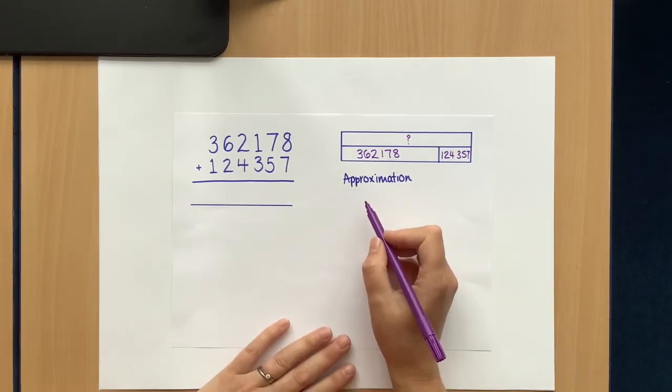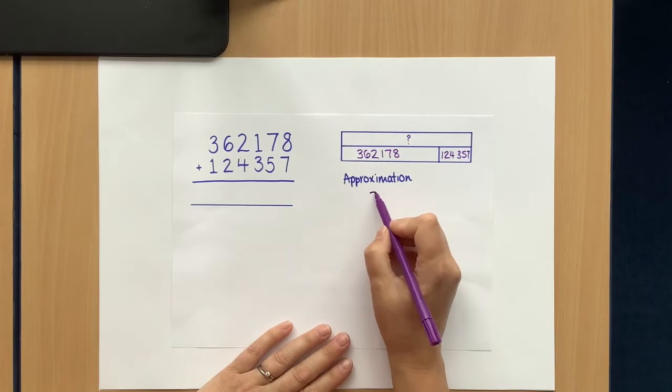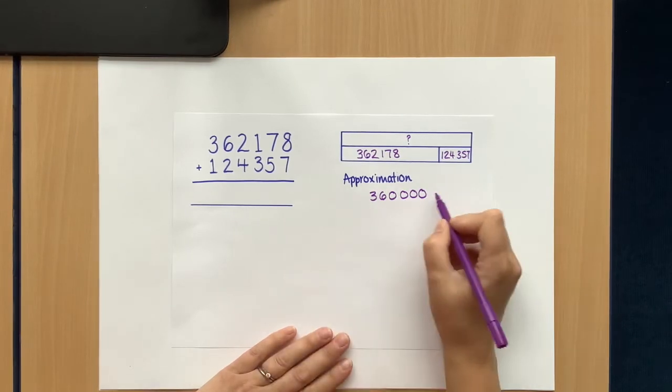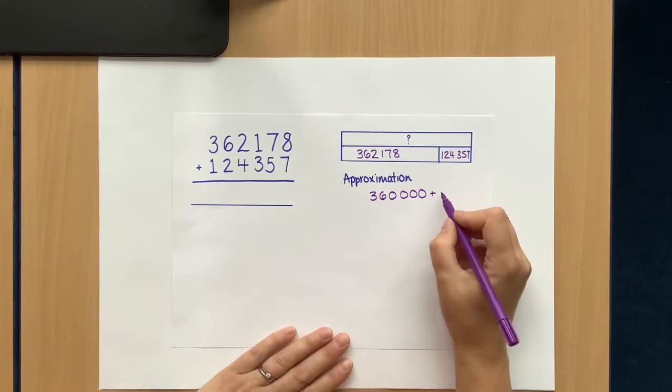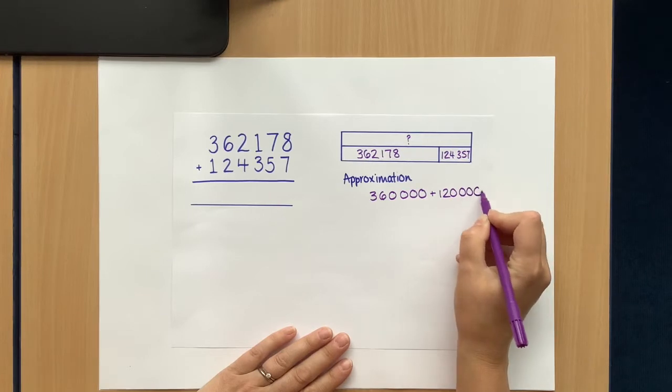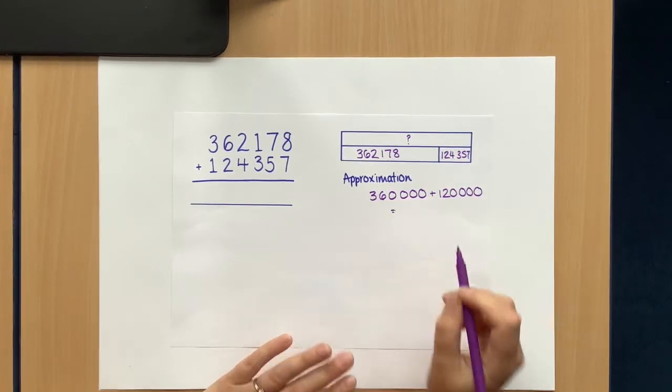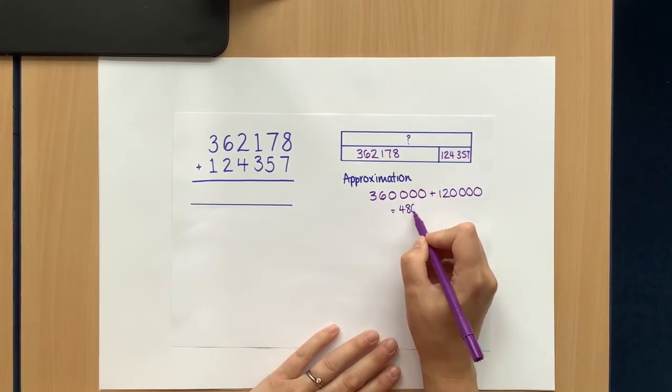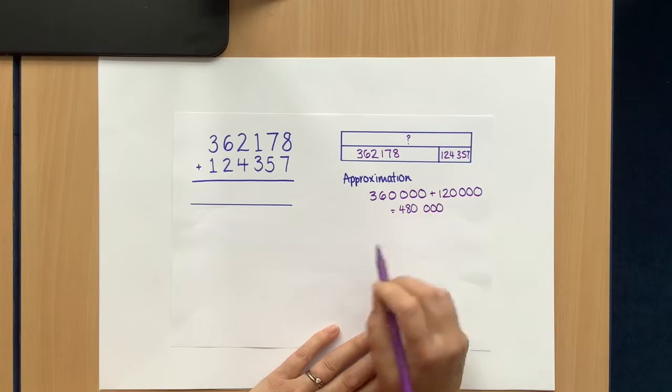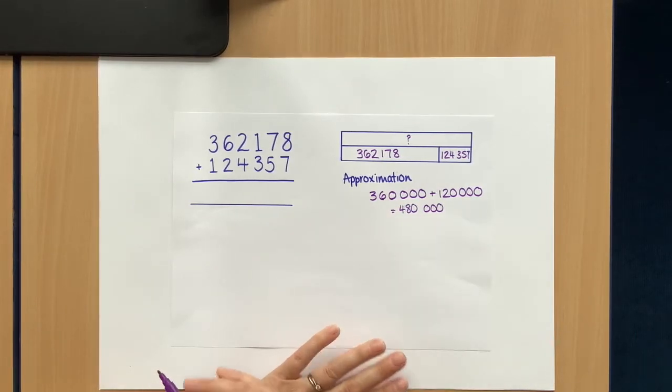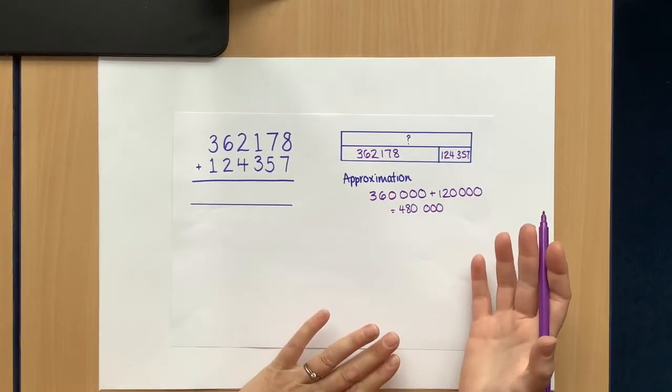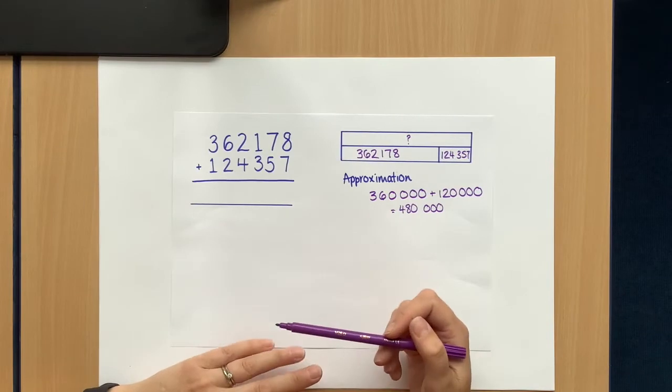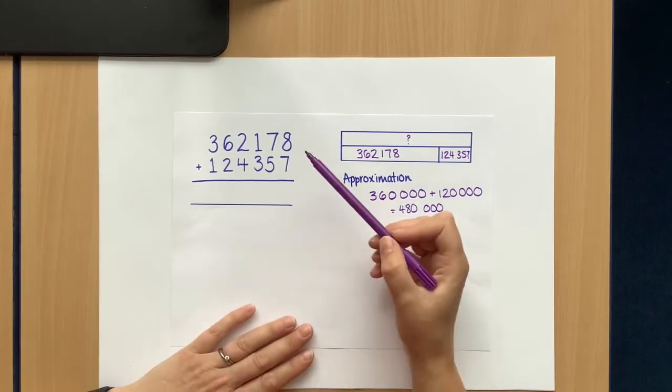I'm going to use the rounding skills we did last week. I'm going to round this one, 362,000, just up to the nearest 10,000 there, to 360,000. And I'm going to round this one to 120,000. I could do that in my head, so I've got 360,000 add 120,000 is 480,000. So my answer's got to be around about 480,000. If I come up with an answer that's 57,000, I know I'm way too low. Let's do the calculation then. I'm just going to model for you the normal method, the column method we use, starting with our ones.